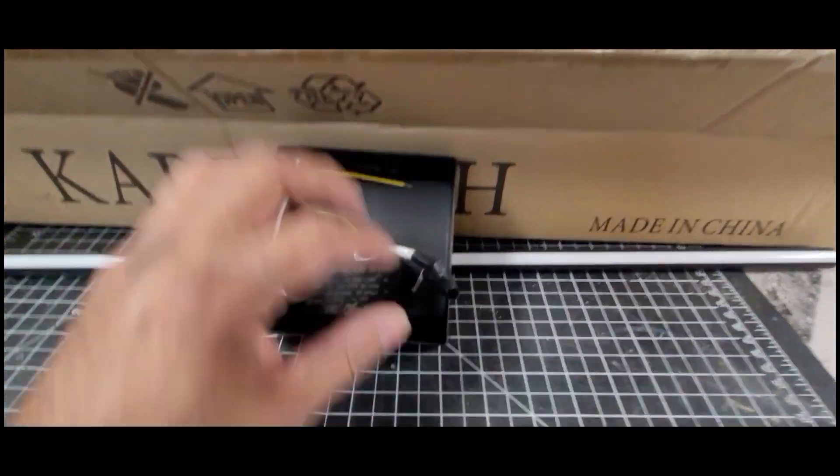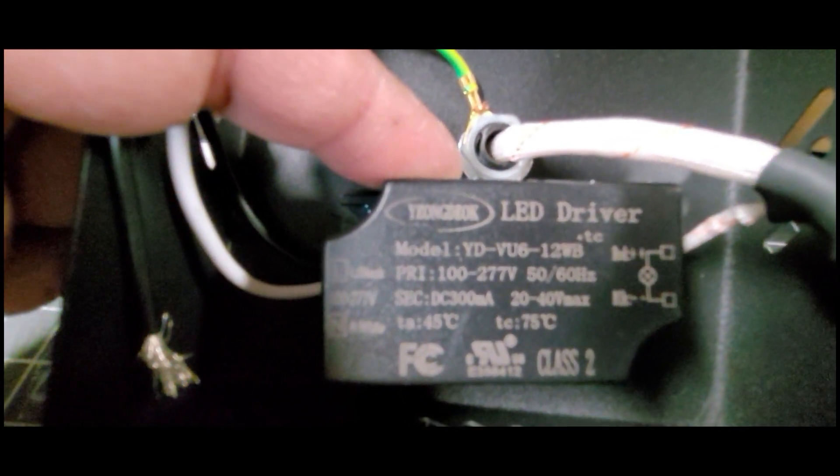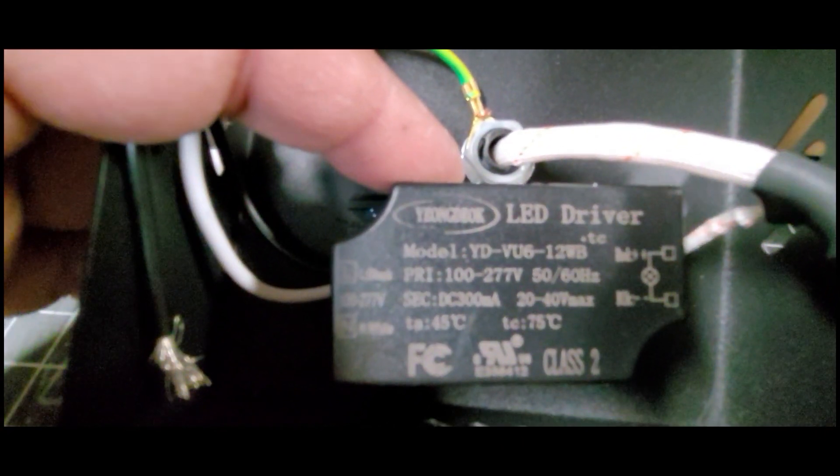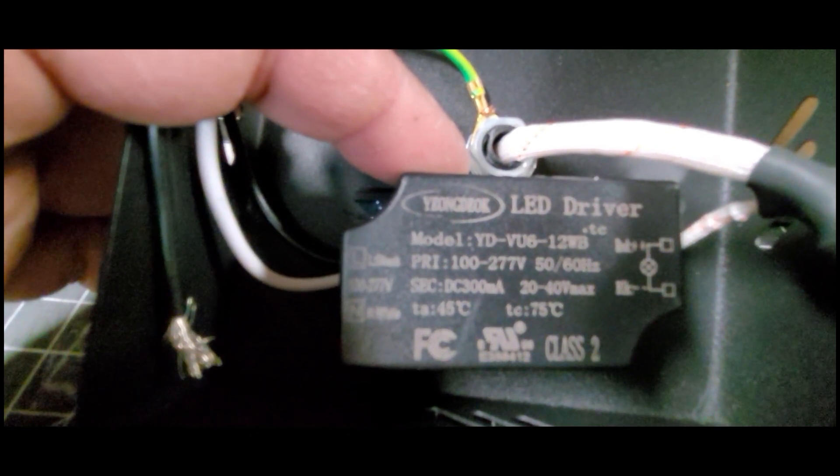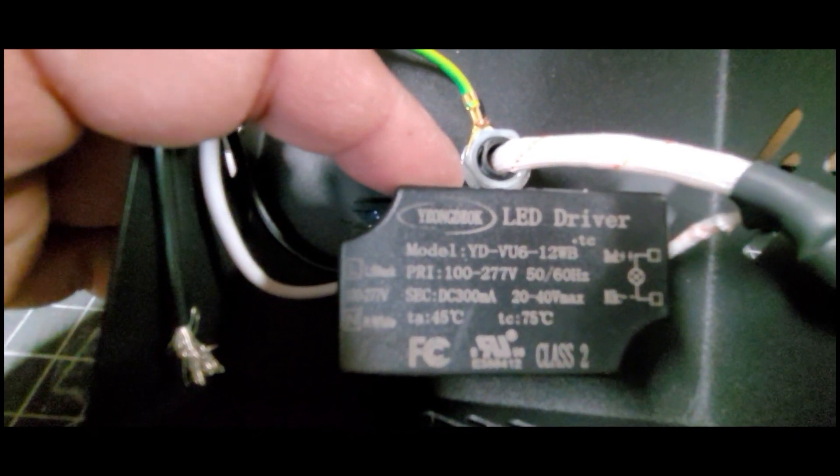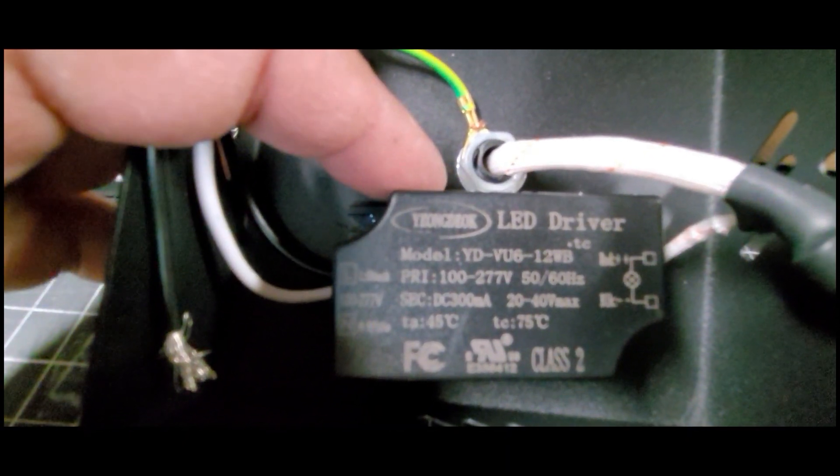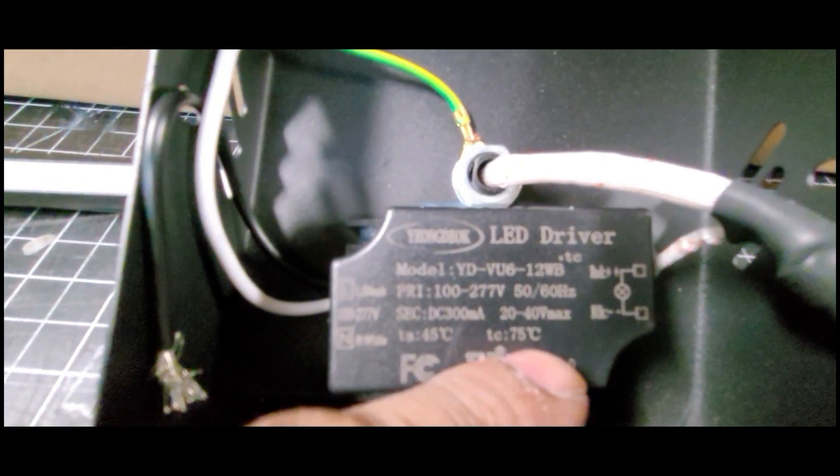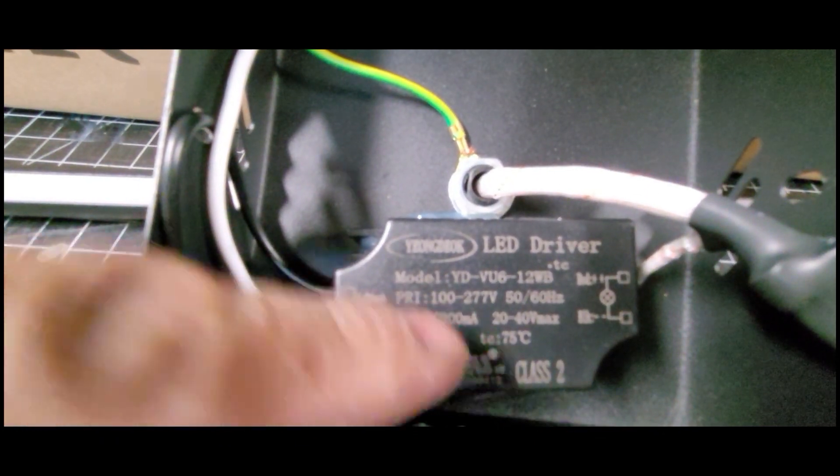I checked the specs on the LED driver. This tells you the input power it takes in and the output power it puts out. I'm seeing 100 to 277 volts as the input and 20 to 40 volts max as the output. That tells me that these LEDs require a range of 20 to 40 volts to run on. That's the size of a DeWalt power drill battery - that's way too much power for what I need. The LEDs I bought only require 4.5 volts so it looks like I'll be having to change the lights.